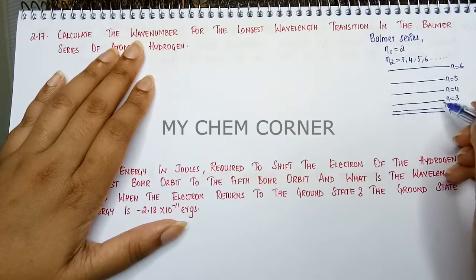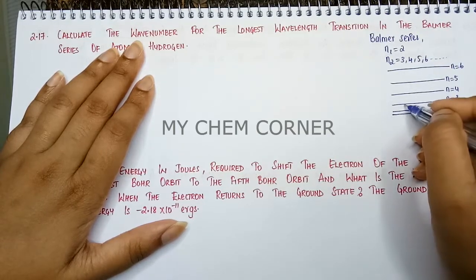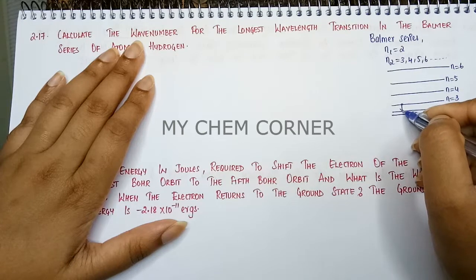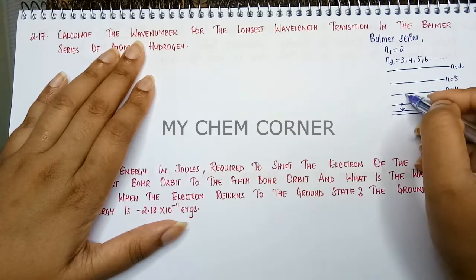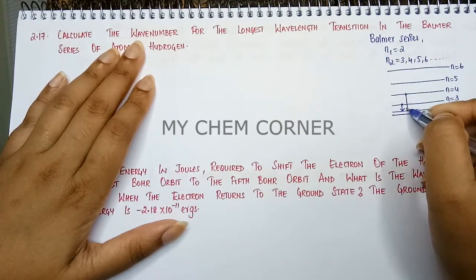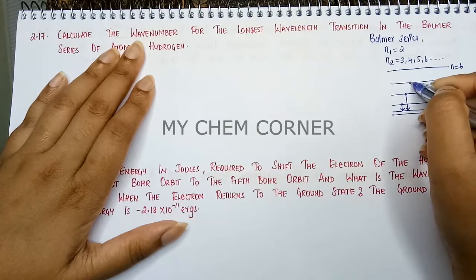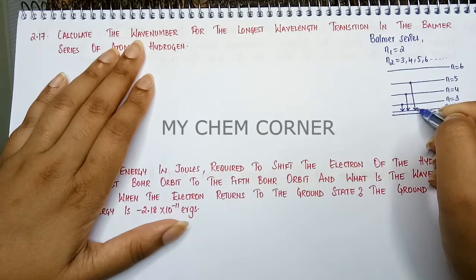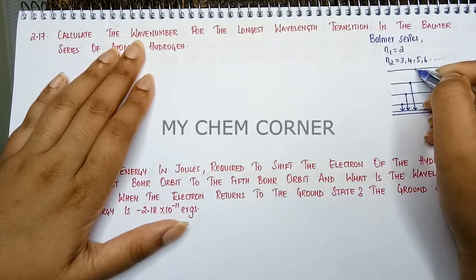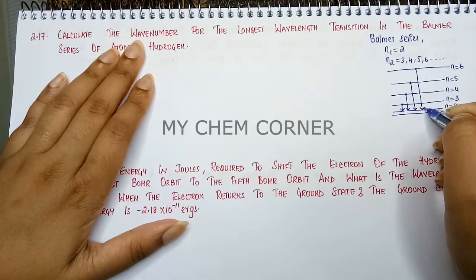So here I will have from third state falling down to ground state which is 2. From here it will fall to 2, from here it will fall to 2 again. So this way the ground state here is going to be 2.